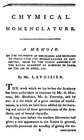A chemical nomenclature is a set of rules to generate systematic names for chemical compounds. The nomenclature used most frequently worldwide is the one created and developed by the International Union of Pure and Applied Chemistry.